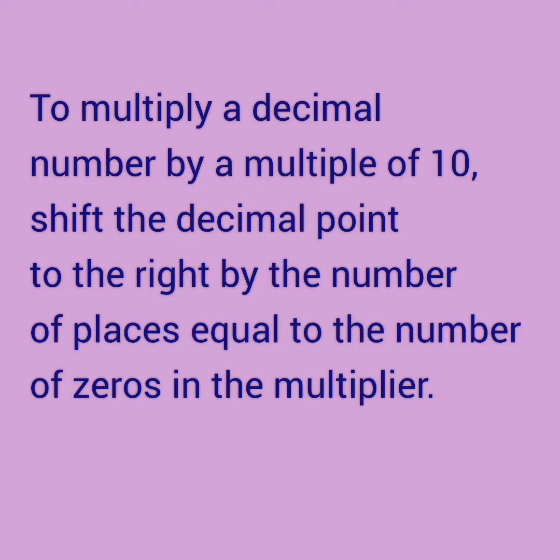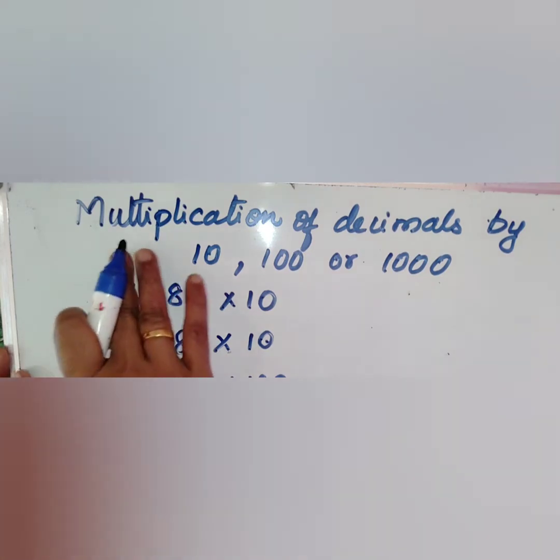To multiply a decimal number by a multiple of 10, shift the decimal point to the right by the number of places equal to the number of zeros in the multiplier. Let's see some examples.